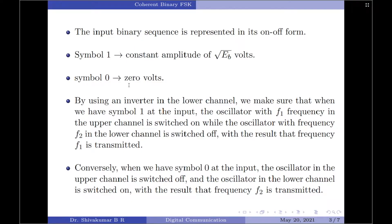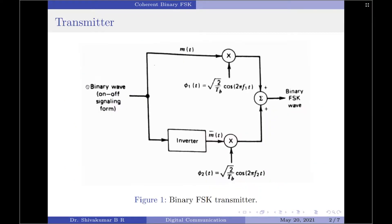Since the input sequence is made up of zeros and ones, and we are going to transmit a separate carrier signal for symbol one as well as symbol zero, we will require two orthonormal basis functions for transmitting the data, to make sure the information about either symbol one or symbol zero is transmitted at any time.